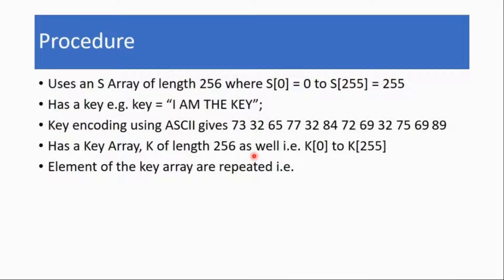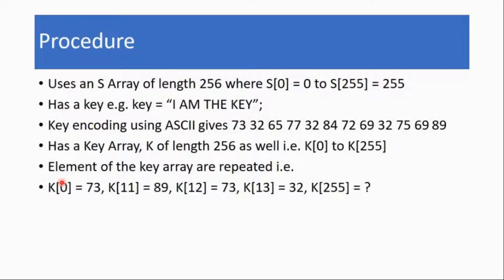The key array is formed from the key and the key array is repeated to fill 256 elements. For example, K0 is 73, K1 is 32, K2 is 65, all the way to K11 which is 89. Since we've reached the end of the key, K12 becomes 73 again, making K13 equal to 32. We do that all the way to K255 — you simply repeat the key.